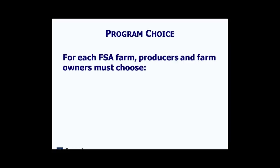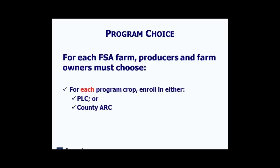The third level decisions are the program choice decisions. For each FSA farm, producers and farm owners must choose — and this is a unanimous decision that involves everybody on the farm, from the producer to the landowner, including landlords for tenant farmers. For each program crop, you will choose to enroll in the Price Loss Coverage Program, County ARC, or for all program crops on the farm, you can choose to enroll all of them in Individual ARC.